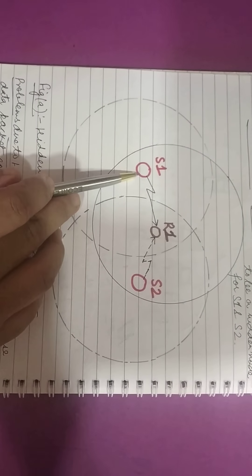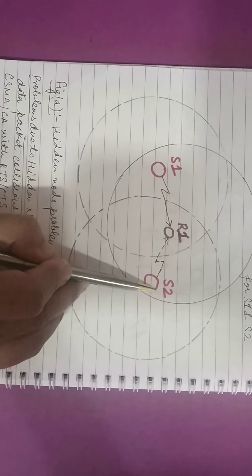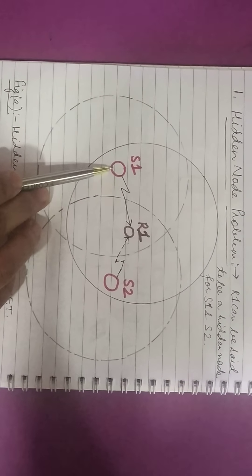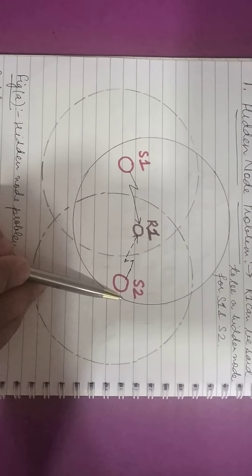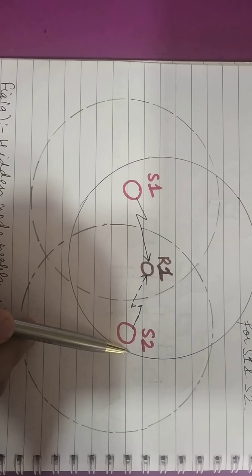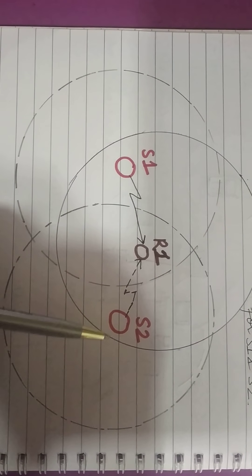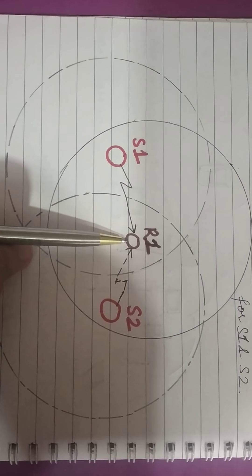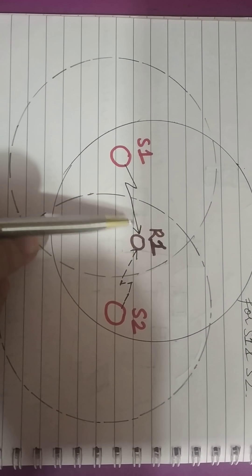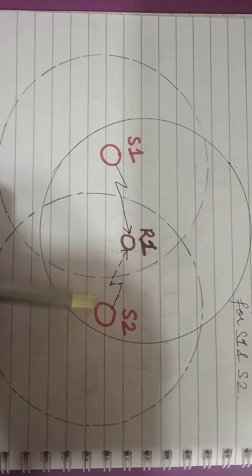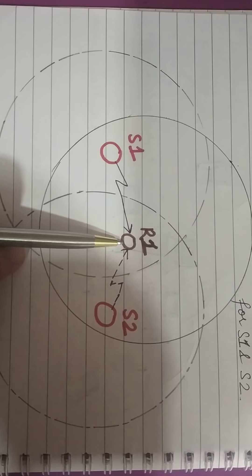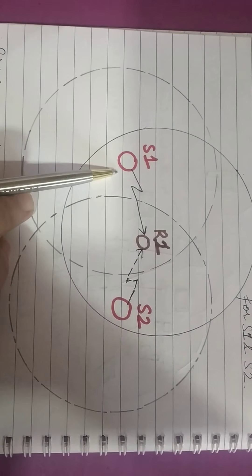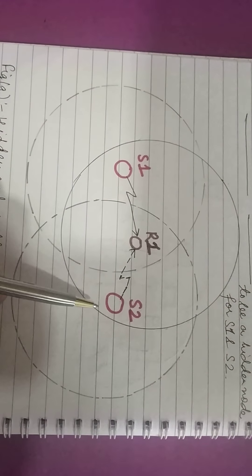S1 and S2 cannot receive transmissions from each other because S1 is out of the range of S2 and vice versa. When node S1 transmits to node R1, node S2 cannot detect this transmission using the carrier sense mechanism. If S2 is also transmitting to R1 at the same time, then this transmission will collide with the transmission between R1 and S1. Both transmissions will be corrupted at node R1, so node R1 can be said to be a hidden node for S1 and S2.